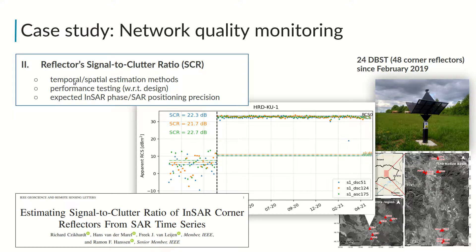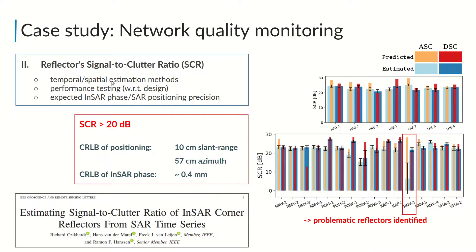Here we implement our novel temporal estimation methods, which may provide a less biased SCR estimate for InSAR corner reflectors compared to the standard spatial estimation method. For almost all corner reflectors in our network, we achieve an average SCR above 20 dB, attaining decimeter-level positioning precision and sub-millimeter InSAR phase variance. We also identify two problematic reflectors under sub-optimal clutter conditions.